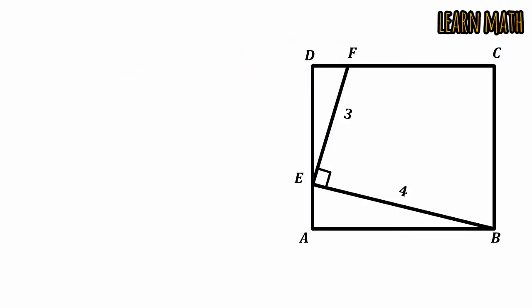Let we have a square ABCD and FEB is a right angle where FE is equal to 3 and EB is equal to 4. We have to find a, the side of the square. Let AE is equal to x and ED is equal to a minus x.